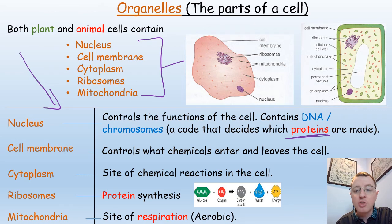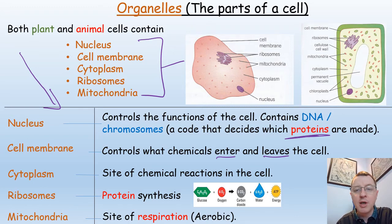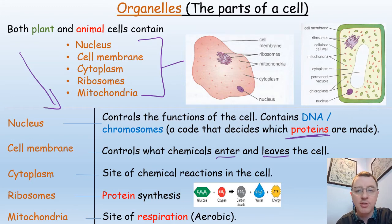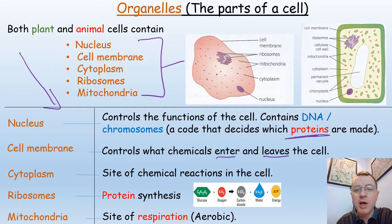The cell membrane can hold certain substances inside the cell for use, or allow certain substances to diffuse out or into the cell. The cytoplasm is the liquid part of the cell and is the site of many different chemical reactions. In particular, one chemical reaction that happens in cells is protein synthesis, and that happens at the ribosomes. Ribosomes may be individual little dots within the cell or attached to larger structures known as endoplasmic reticulum.